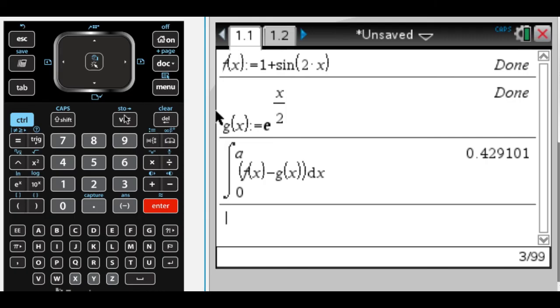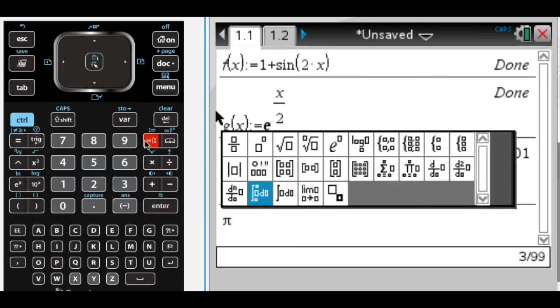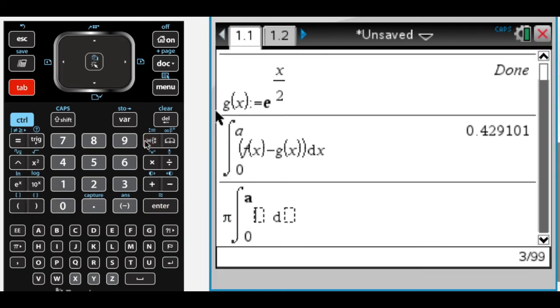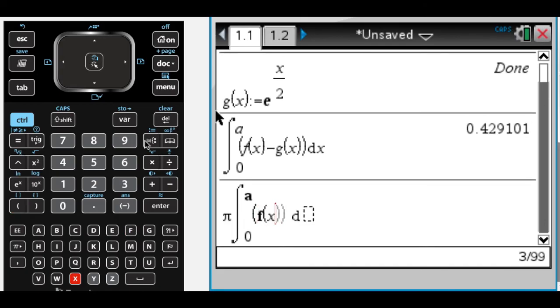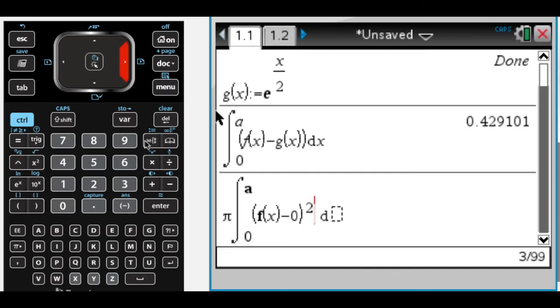Part B here is to find the volume of the solid. So the volume of the solid in this case, we need a pi. So pi. And then it's going to be a definite integral again. The integral. And it's from 0 to A once again. And it's going to be the outer curve, which is f of x, minus the axis, which is 0. I like to throw that in for when it's not 0.